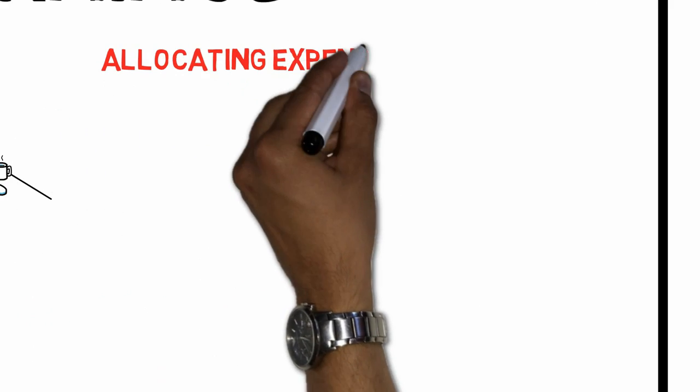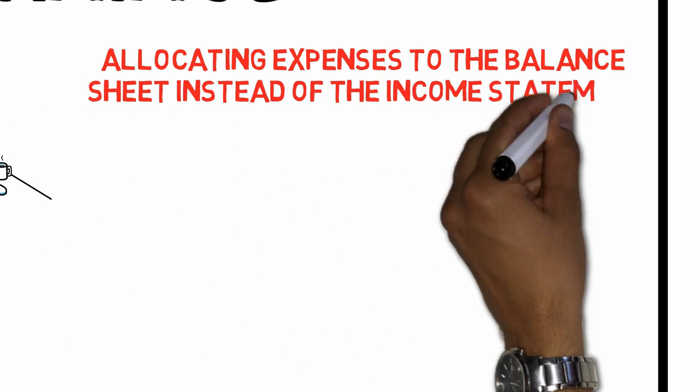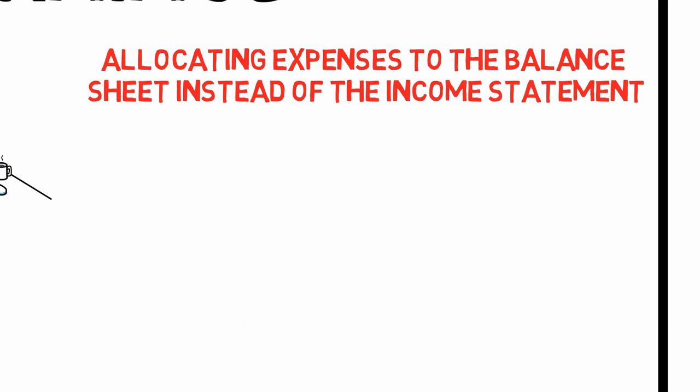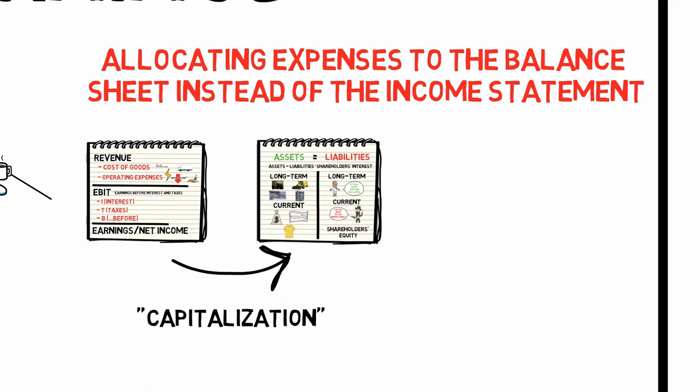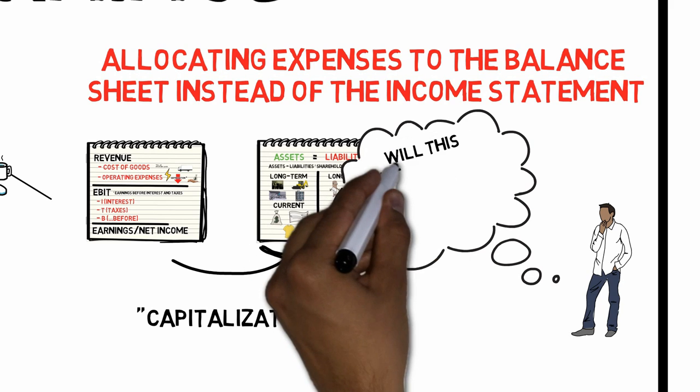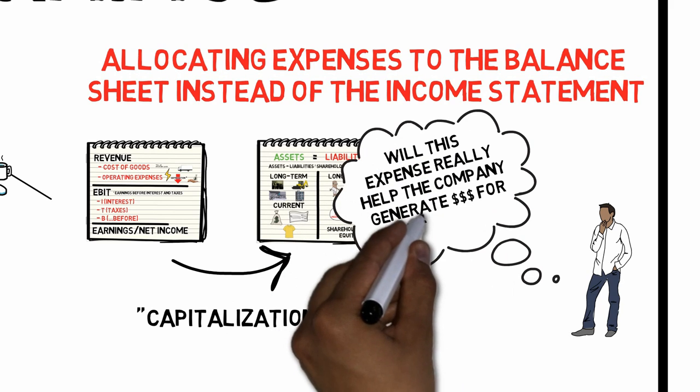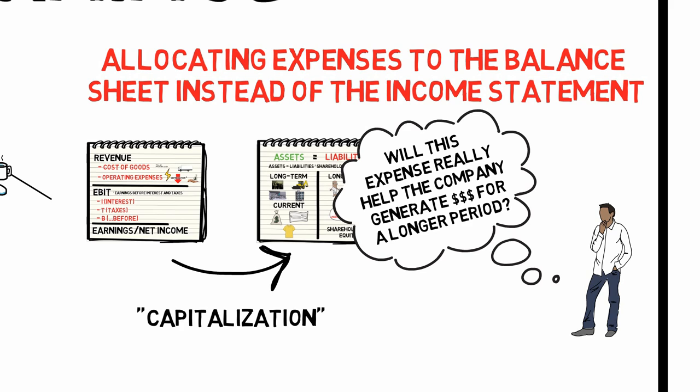The third method: allocating expenses to the balance sheet instead of the income statement. Companies sometimes capitalize normal operating costs, reducing their expenses in the income statement by moving them to the balance sheet and building up long-term assets — thus increasing reported income. The YouTuber faces an interesting version of this: if he creates content that can be consumed over many years, should expenses associated with his video making be considered operating expenses or capital expenses?